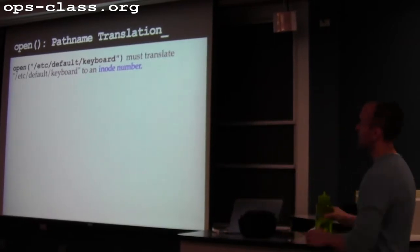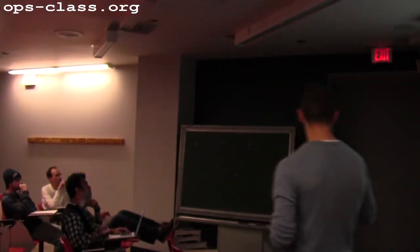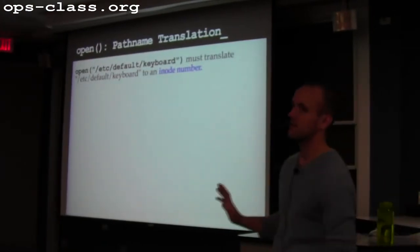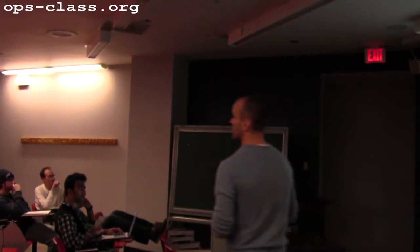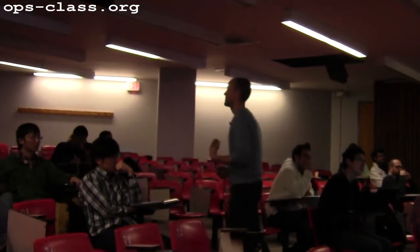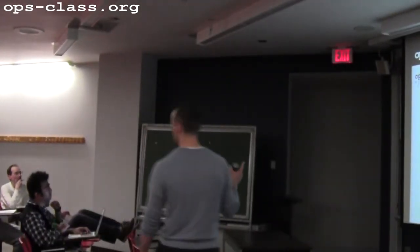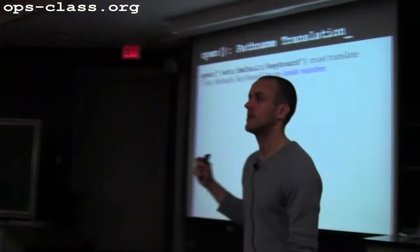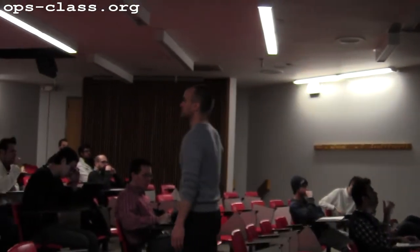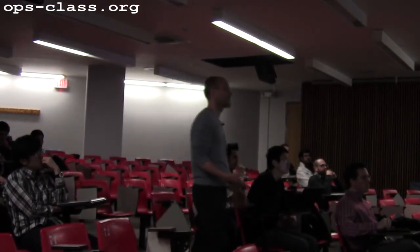When I call open, the process hands a path to the file system, and the file system needs to translate that path to an inode number. This could be a file or directory — I need to figure out what inode number corresponds to this path. For assignment 2 you're not bothering with this — you just pass it into VFS open and you're done. But what is VFS open doing? So what's the process of translating this path into an inode number? There is a unique inode number on the system for /etc/default/keyboard — this is a file.